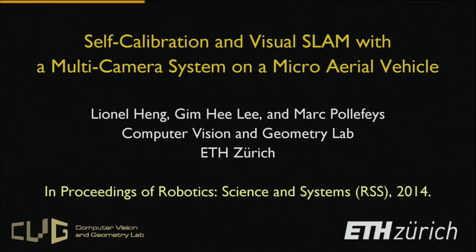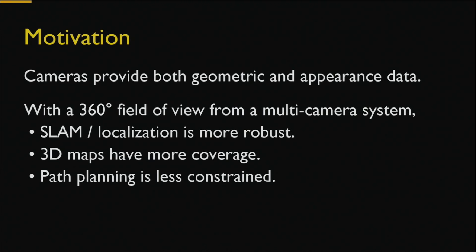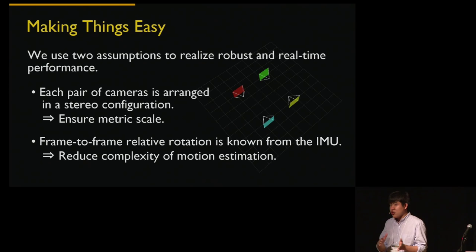Hi, I'm Yano, a PhD student in the ITHC series. I will talk about self-calibration and visual SLAM with a multi-camera system on an MAV. We want to demonstrate real-time onboard multi-camera SLAM with loop closure. Before we can do SLAM, we need to develop a self-calibration algorithm to estimate the camera-IMU transform — it's very important to be accurate to do SLAM properly. The motivation for using a multi-camera system is that we get a 360-degree field of view, giving us more robust SLAM and localization, more complete 3D maps, and less-constrained path planning. We arrange a pair of cameras in a stereo configuration to get 3D data, use the 3D data to ensure metric scale, and assume we know the relative rotation to reduce complexity of motion estimation to only translation.